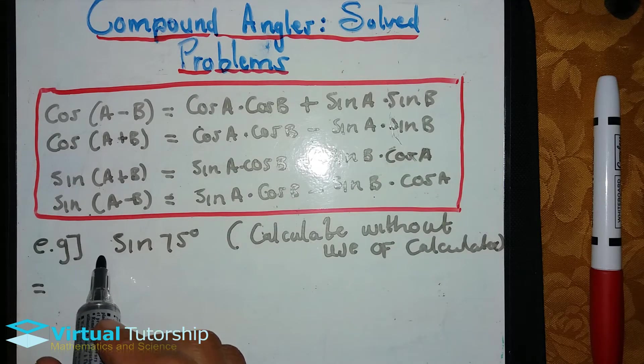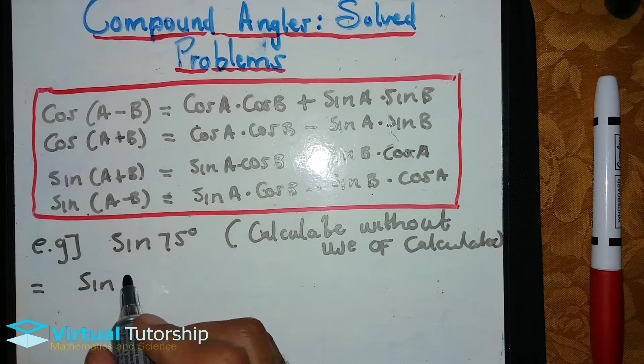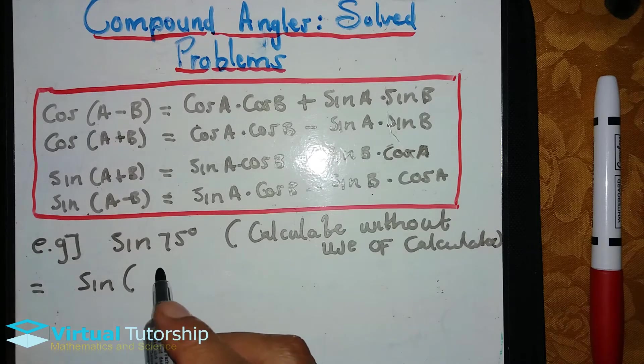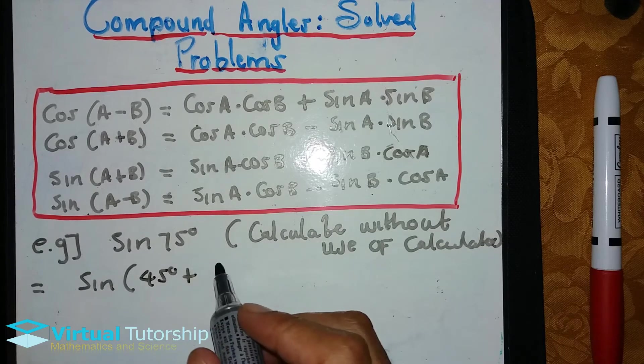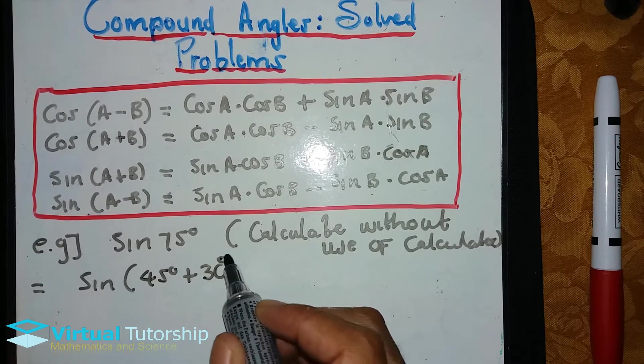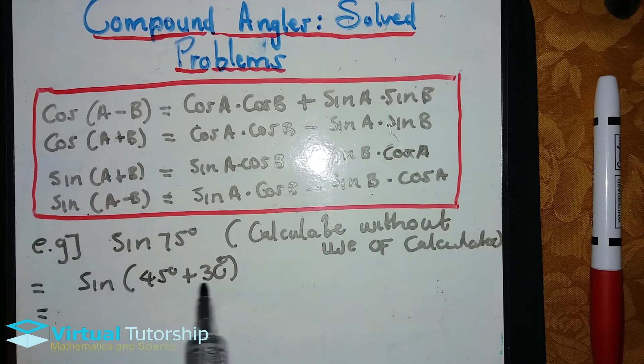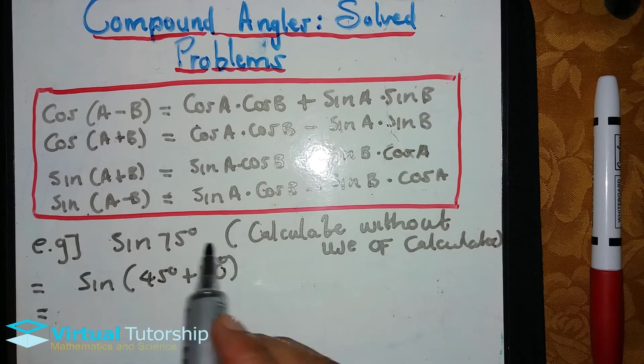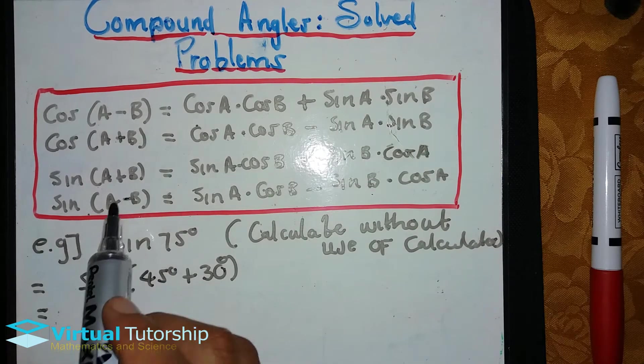In this case, we have 75 degrees. So we need to express sine 75 as a compound angle. This 75 we can rewrite in terms of our compound angles. I think 45 degrees plus 30 degrees equals 75. So in other words, I'm breaking the 75 into special angles.